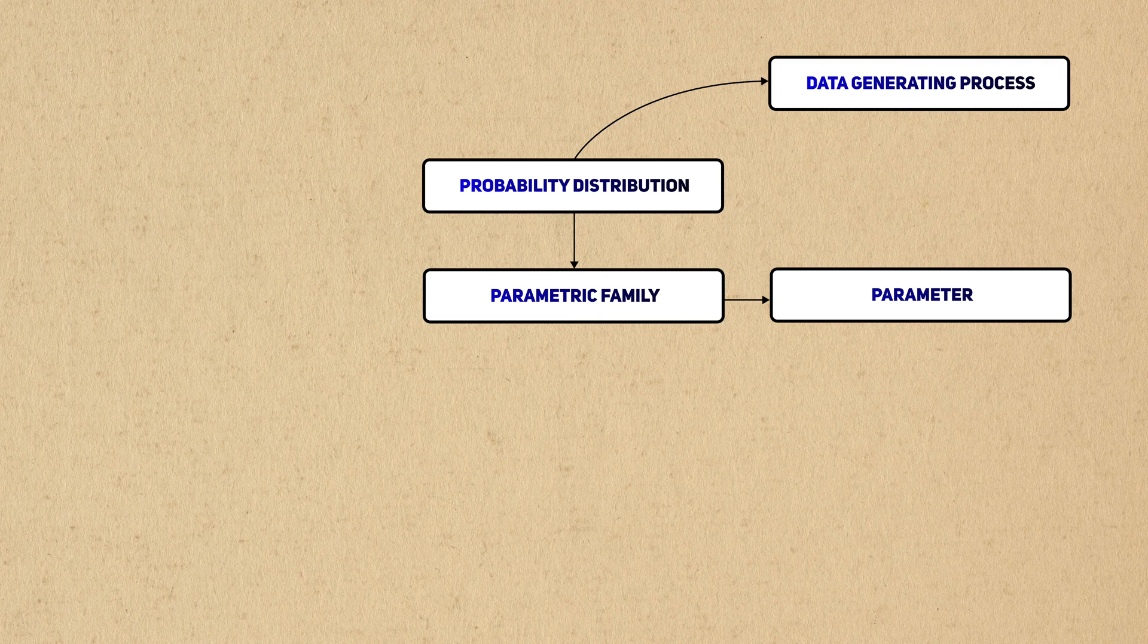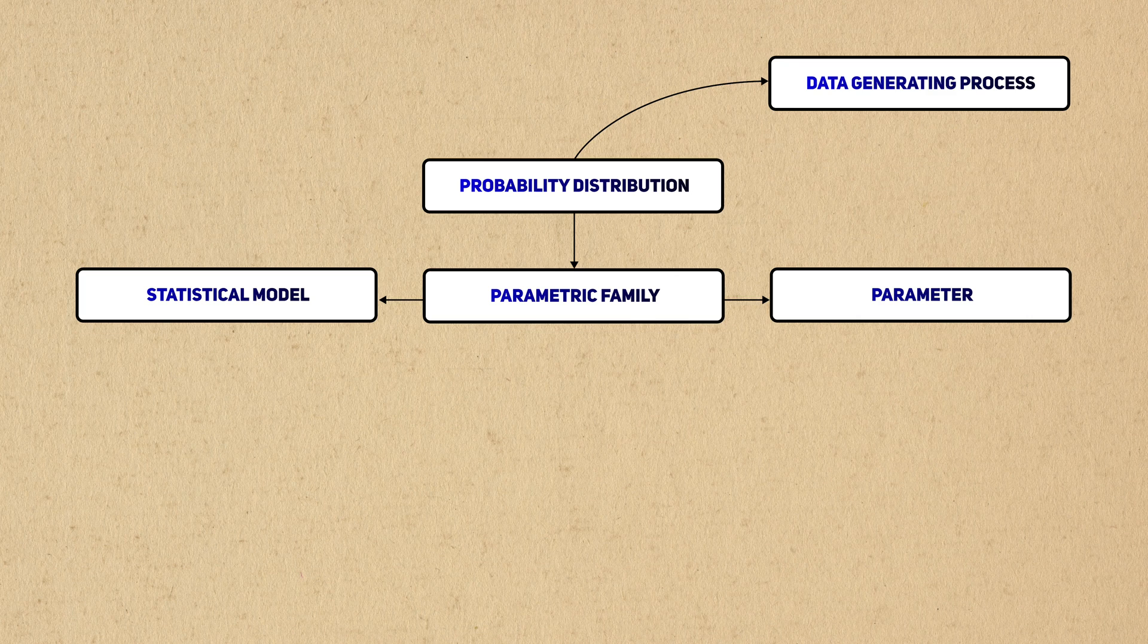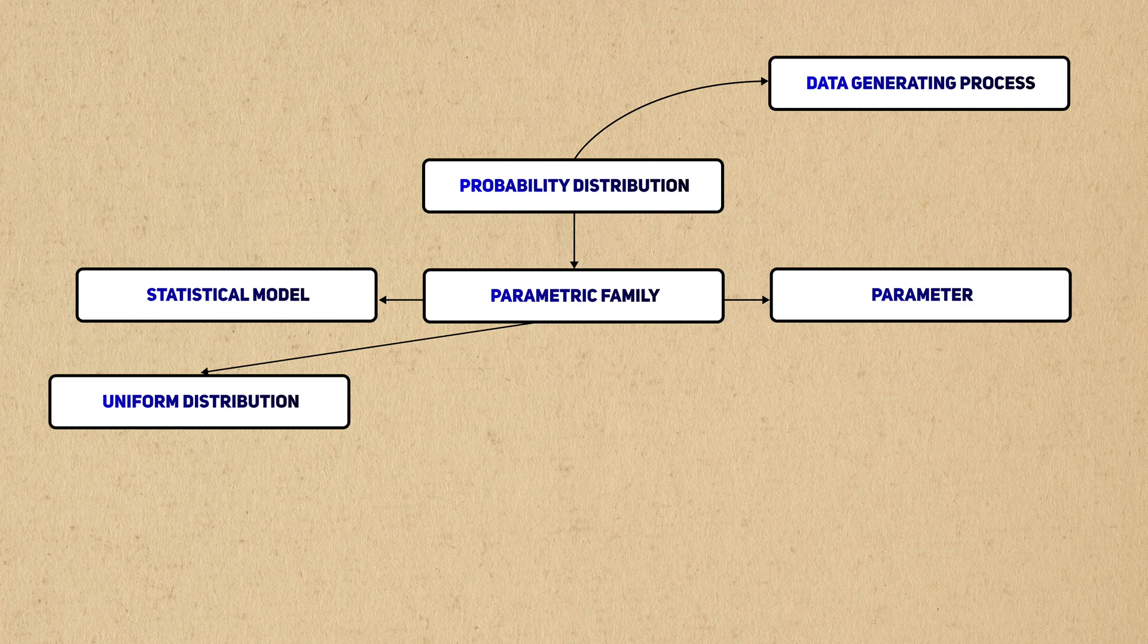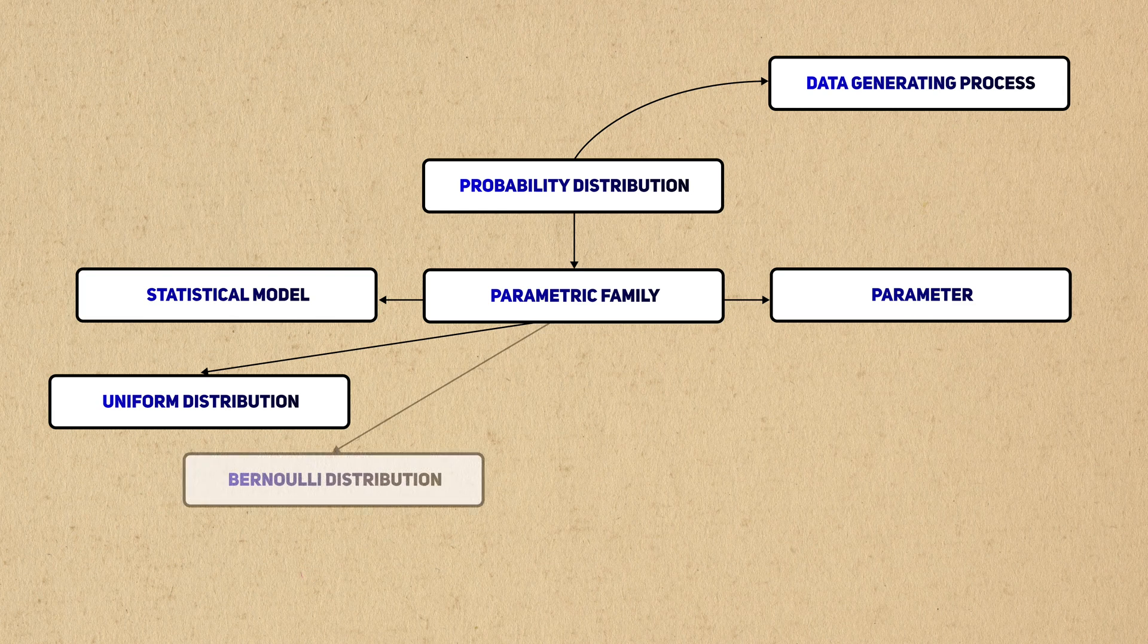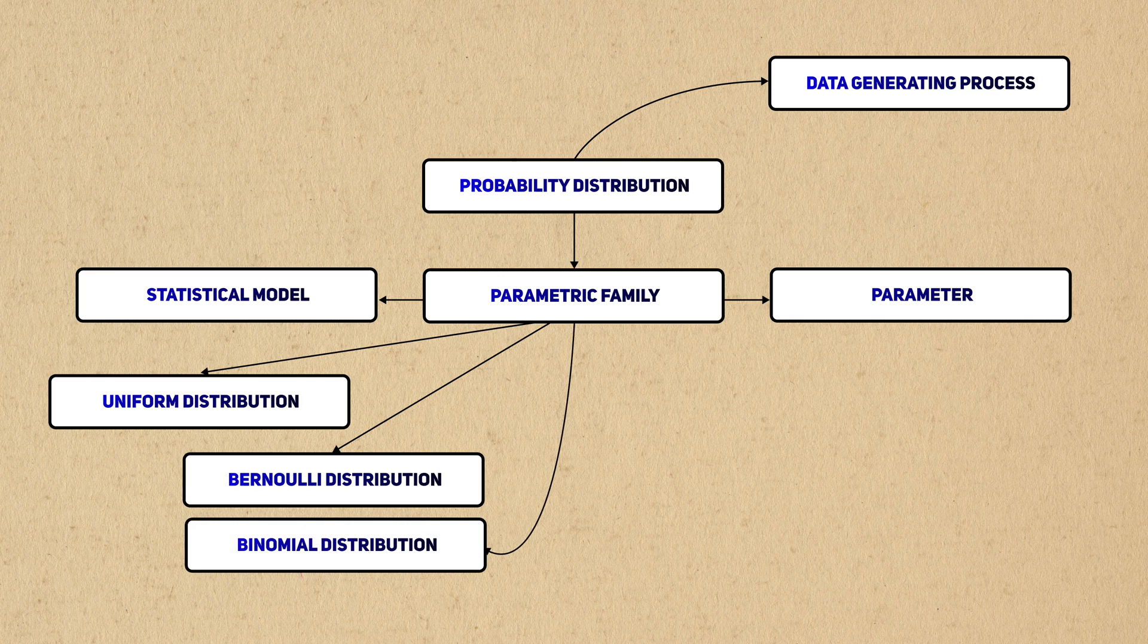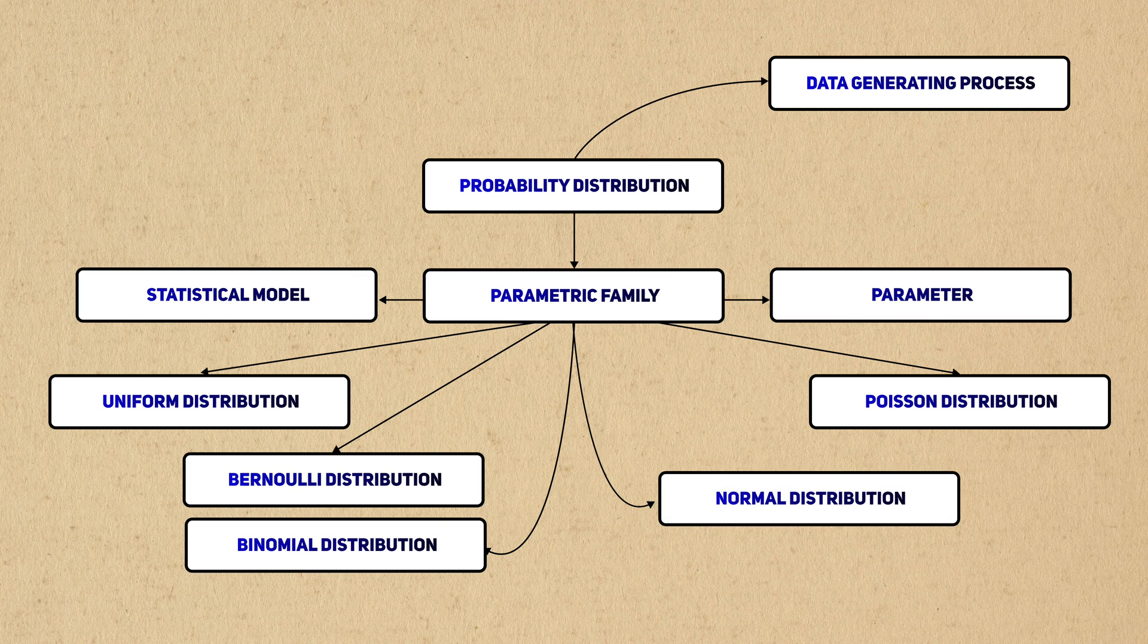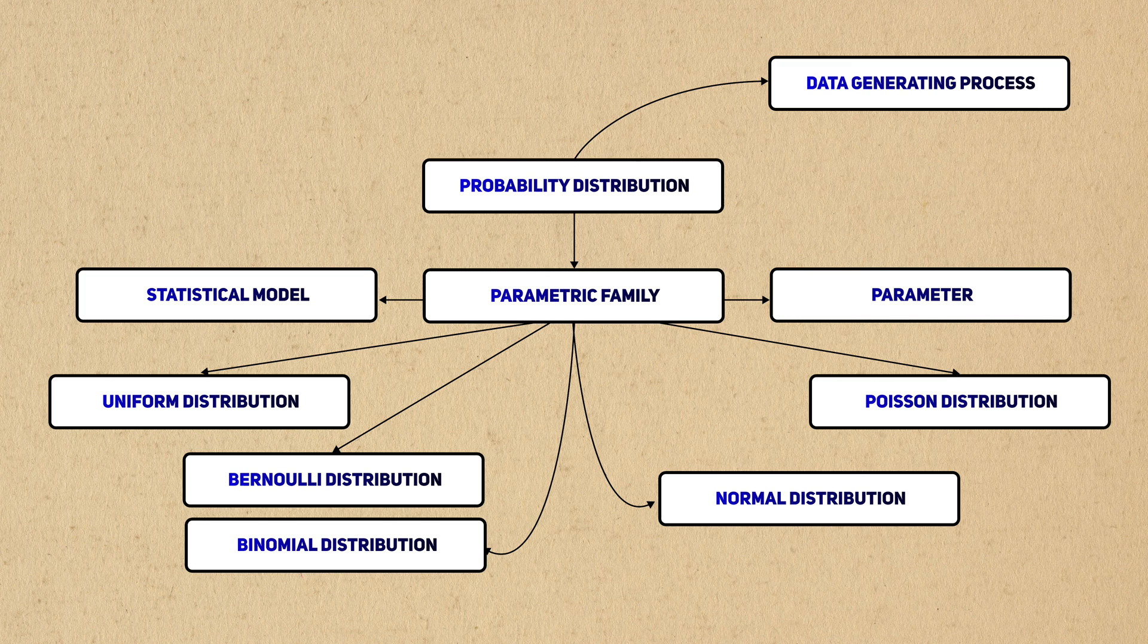There are several examples of parametric families, some of which are so commonly used that we give them names. The uniform lets us model situations where all values are equally likely. Bernoulli distributions model metaphorical coin flips, and binomial distributions model many coin flips. The Poisson distribution models counts, and nobody cares about them. The normal distribution lets us model continuous data, as in extremely common to see for distributions in statistics.